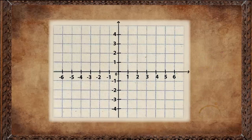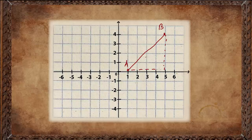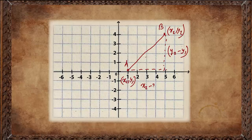Algebra can also be used to express geometric properties. The length of a line — if this point is A and this point is B — can be found by considering it as a right-angled triangle. If this point is (x1, y1) and this point is (x2, y2), we consider the height of the triangle to be the difference of y, which is y2 minus y1, and the width to be the difference of x, which is x2 minus x1.